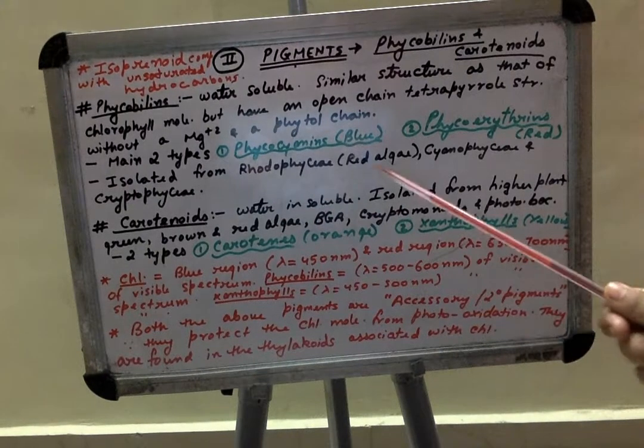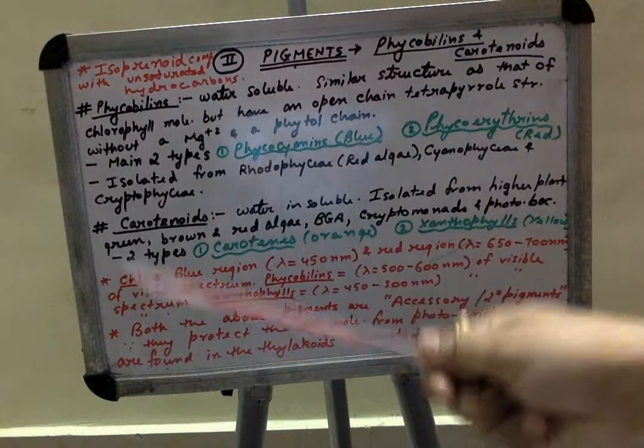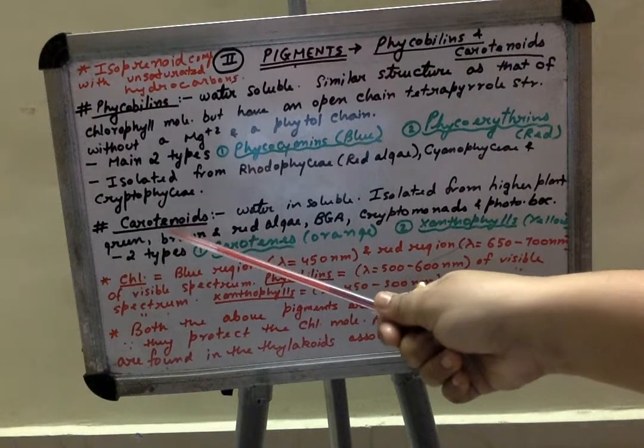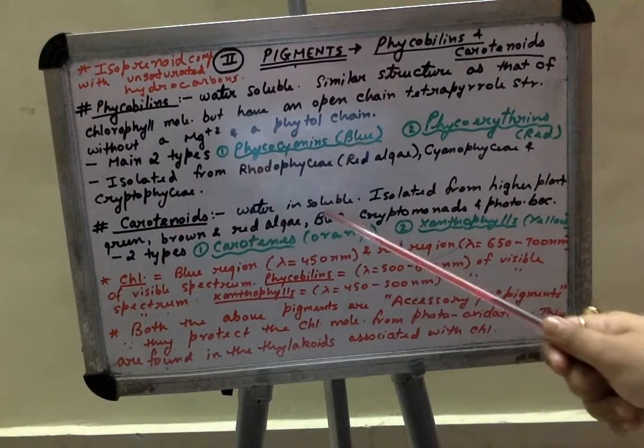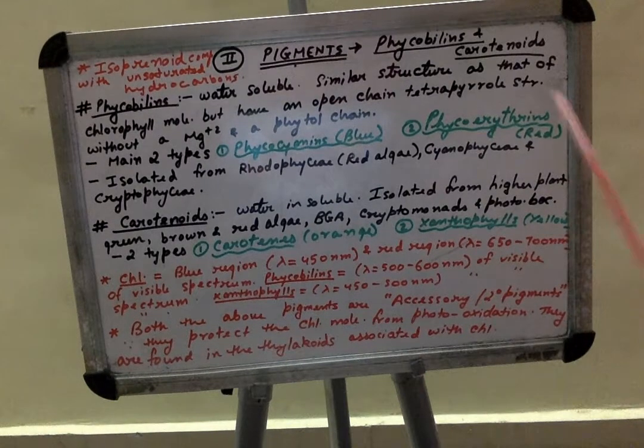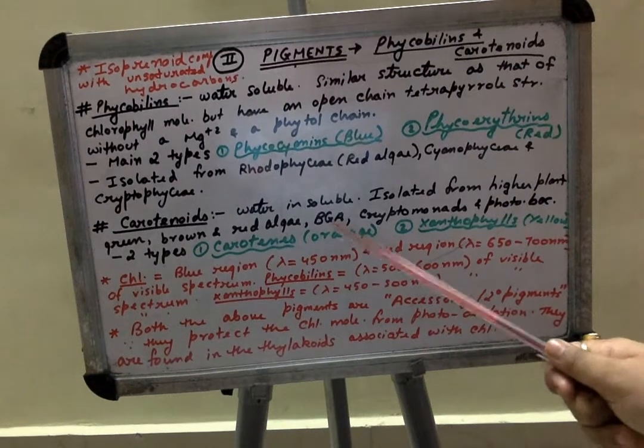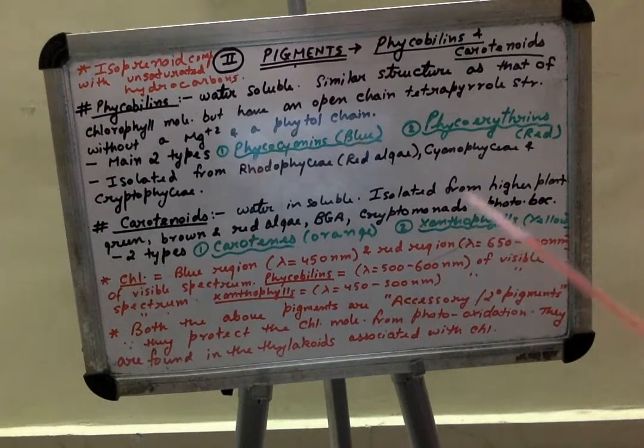They are isolated from rhodophyceae, that is red algae, cyanophyceae and cryptophyceae. The second one is carotenoids, water insoluble just like chlorophyll. It is isolated from higher plants, green brown and red algae, blue-green algae or BGA, cryptomonas and photosynthetic bacteria.